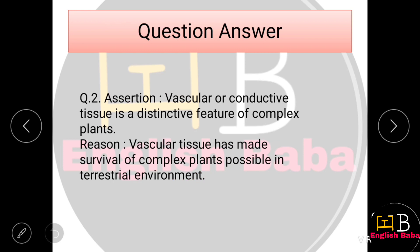Assertion-Reason Question 2. Assertion: Vascular and conductive tissue is a distinctive feature of complex plants, like xylem and phloem. Reason: Vascular tissue has made survival of complex plants possible in terrestrial environments. Both assertion and reason are correct, but the reason has not explained the assertion — it presents a different statement. So Option B is correct.